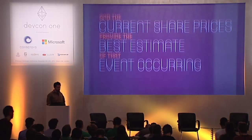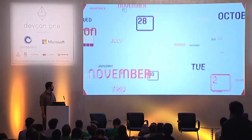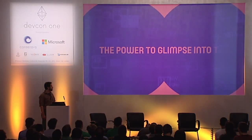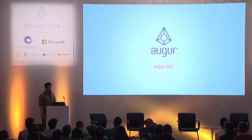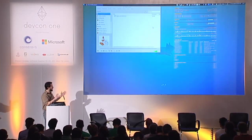Imagine being able to Google questions about things that haven't happened yet and receiving accurate odds of their occurrence. That power — the power to glimpse into the future — is what we believe everyone should have access to. Okay, so that's sort of a high-level overview of what we're making. We're making a prediction market platform.